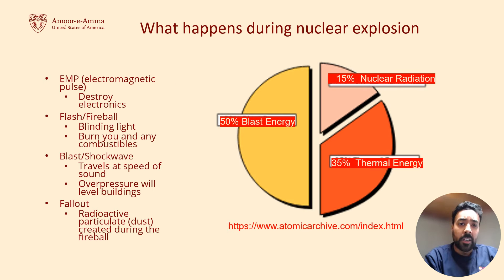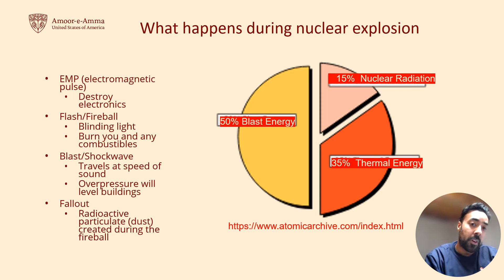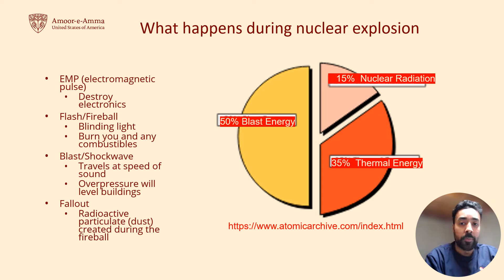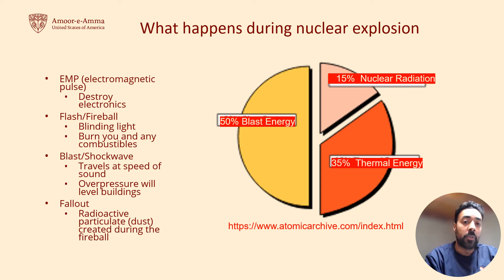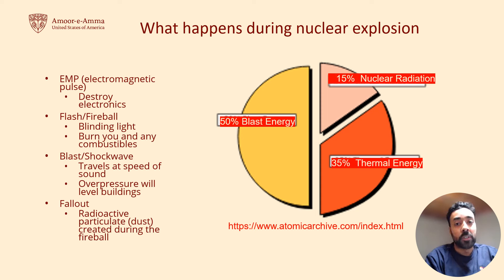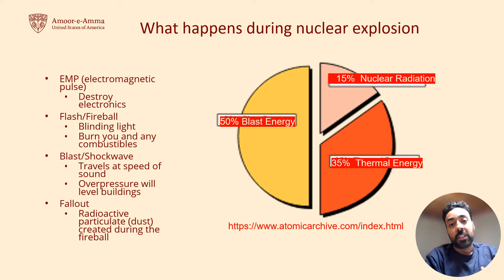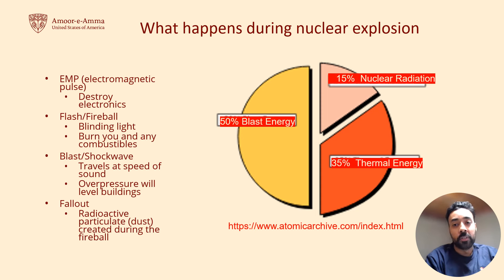In order to prepare for a nuclear explosion we need to understand what exactly happens during one. It consists of three main parts: thermal radiation, the blast or overpressure, and fallout. The release of thermal energy is the main difference between a nuclear explosion and a conventional explosion. In a conventional explosion, the majority of the energy is the blast with very little thermal portion. The flash is the first thing you'd see, followed by thermal radiation traveling at the speed of light, which will burn your eyes, your skin, and any combustible materials in its path.